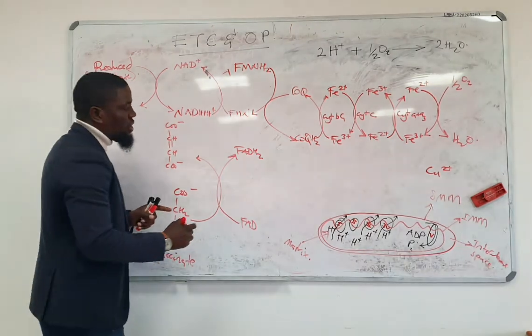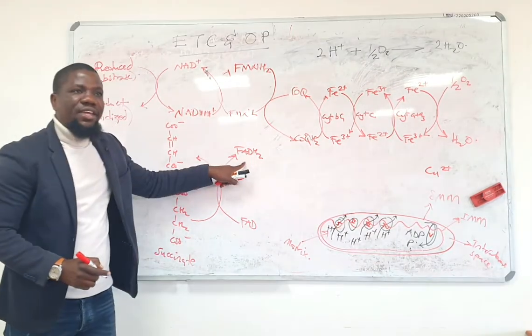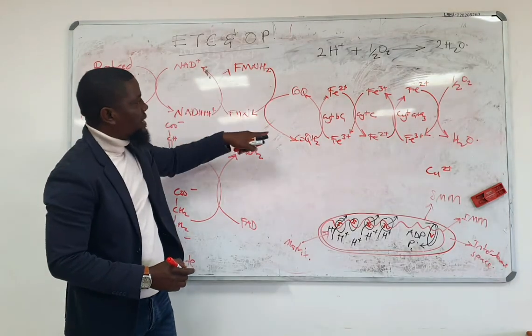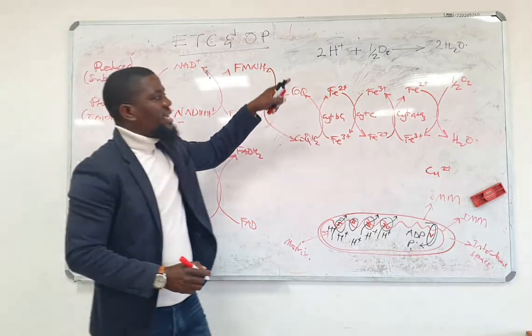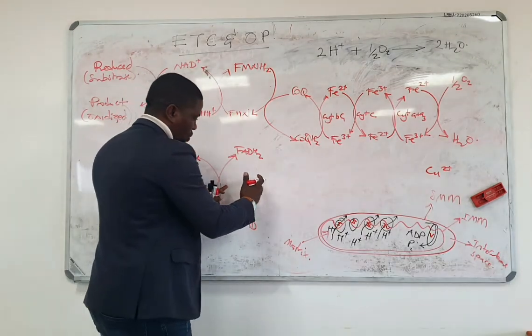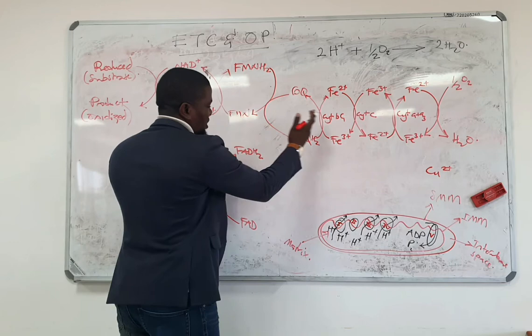The next reaction is that this FAD is going to give the electrons onto coenzyme Q and from coenzyme Q it will go to cytochrome BC1. So this reaction up to here, from there, is very similar.